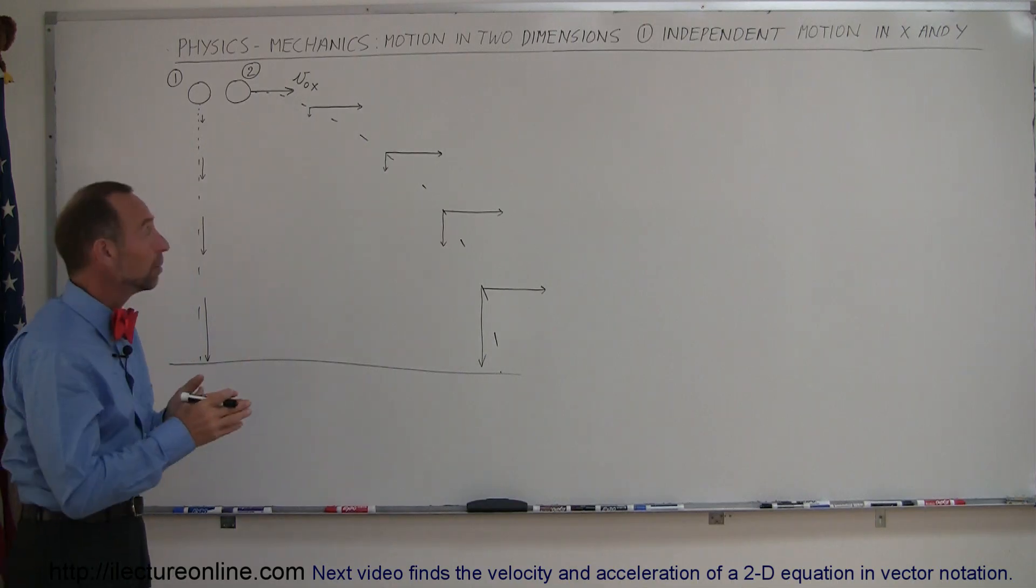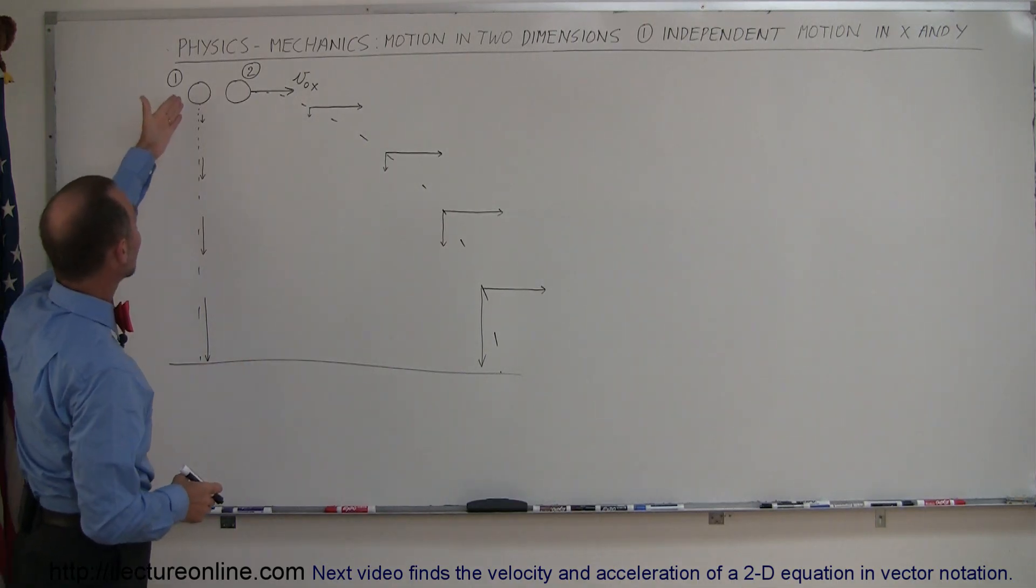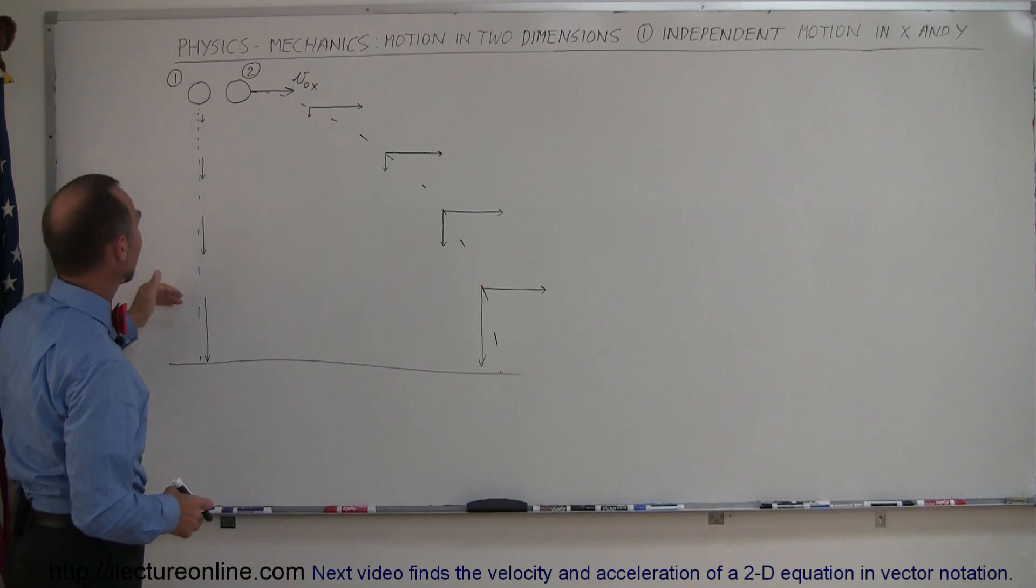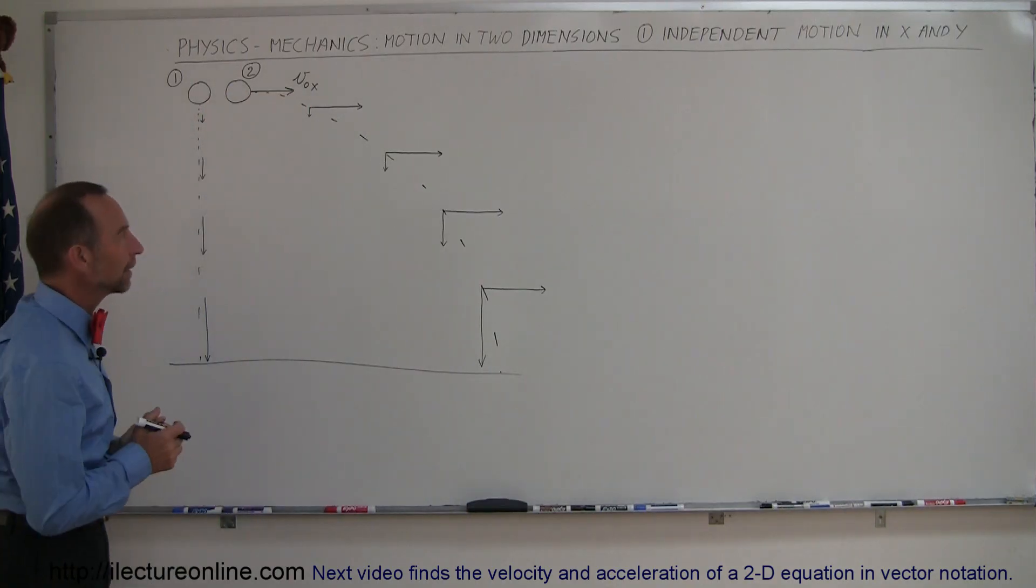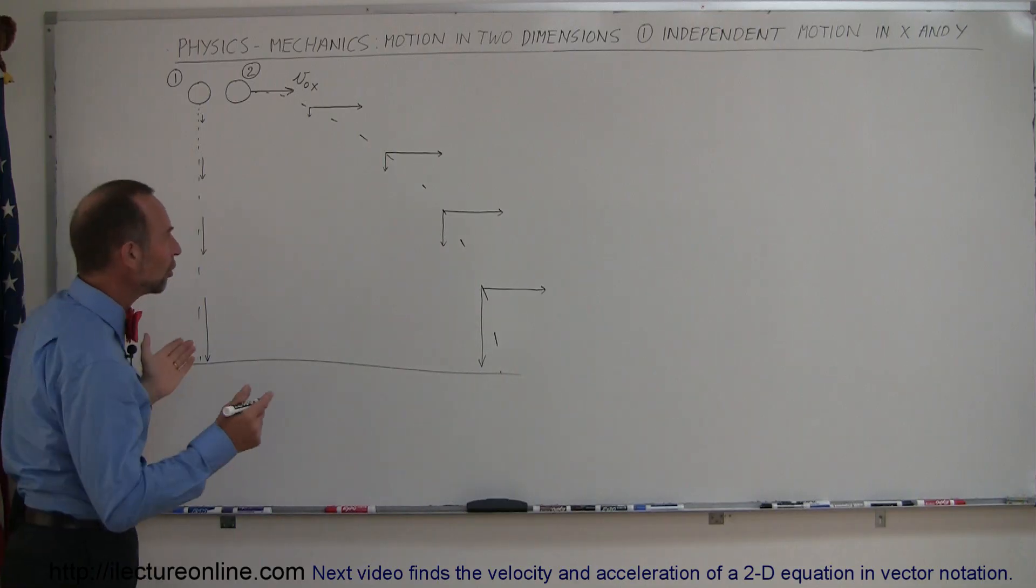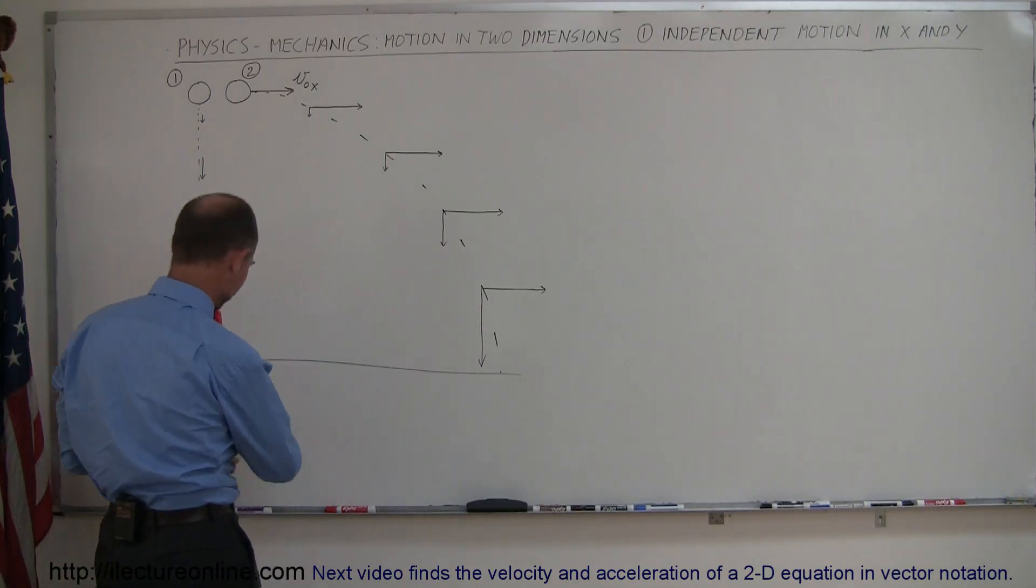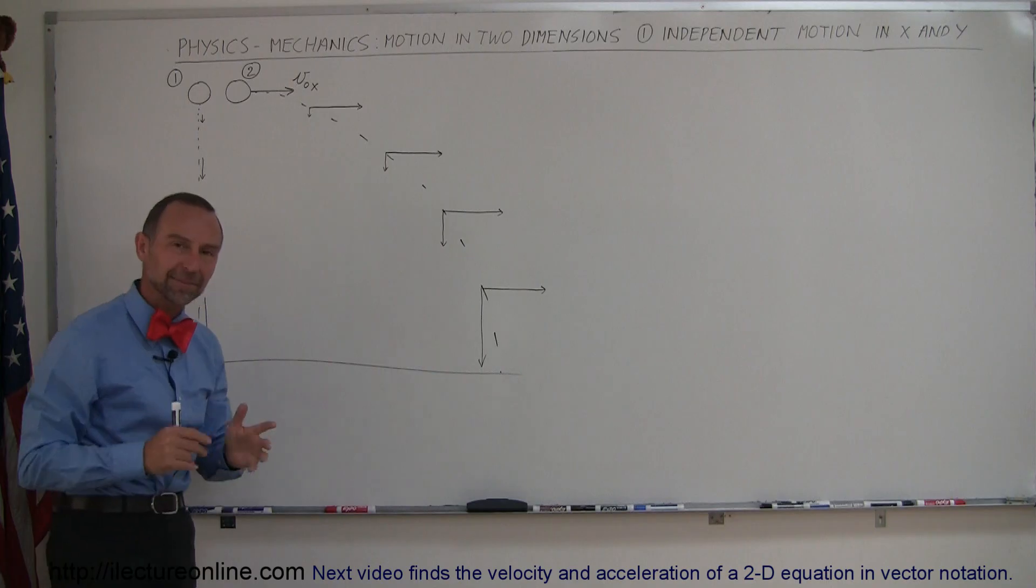We have two objects, let's call them balls. One that's simply dropped from a certain height and one that's thrown horizontally outward, also from the same height. And then the question of course is which ball will hit the ground first, and of course the ground should have been flat, not quite.